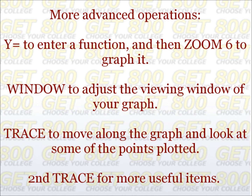You can press the Y= button to enter a function, and then hit ZOOM followed by 6 to graph it in a standard window. Practice using the WINDOW button to adjust the viewing window of your graph. You can use the TRACE button to move along the graph and look at some of the points that are plotted. With the CALC button — which you access by hitting the second button followed by TRACE — you will get a menu of useful items. For example, if you select 0, you can tell where the graph hits the x-axis, or equivalently where the function is 0. The MINIMUM or MAXIMUM buttons can be used to find the vertex of a parabola, and selecting INTERSECT will find the point of intersection of two graphs.